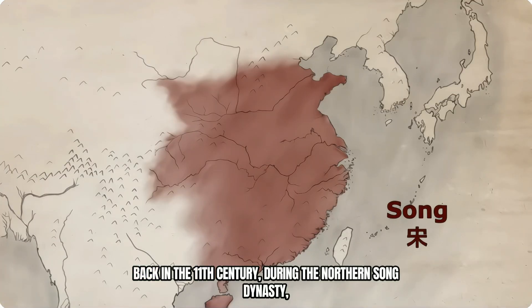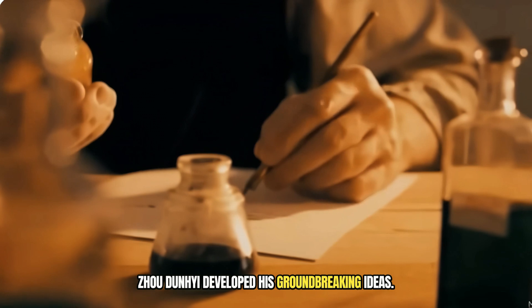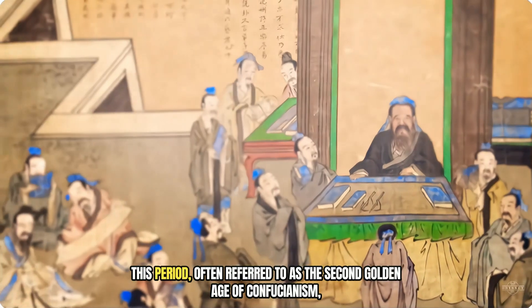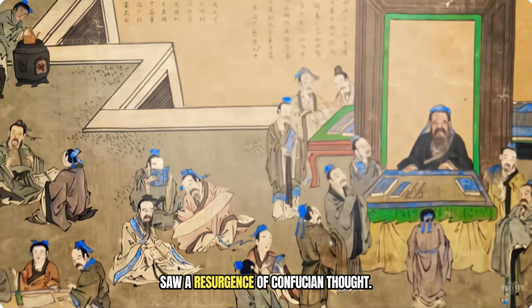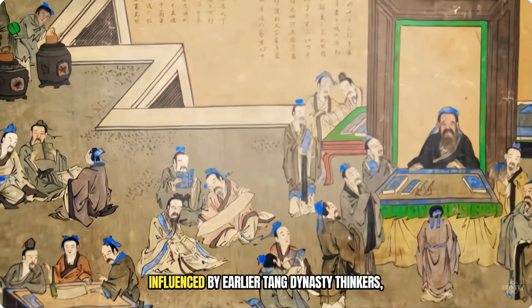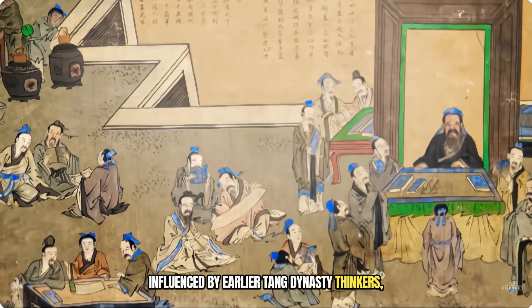Back in the 11th century, during the Northern Song Dynasty, Zhou Dunyi developed his groundbreaking ideas. This period, often referred to as the Second Golden Age of Confucianism, saw a resurgence of Confucian thought influenced by earlier Tang Dynasty thinkers.